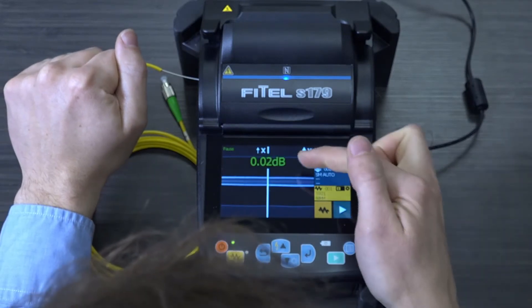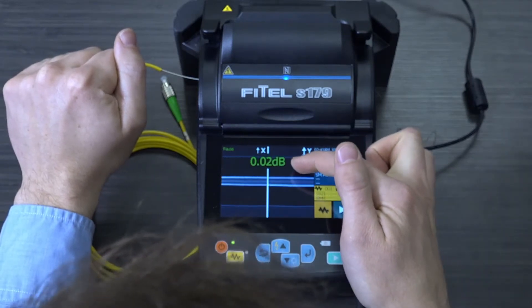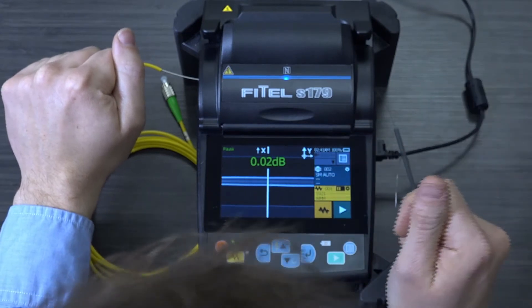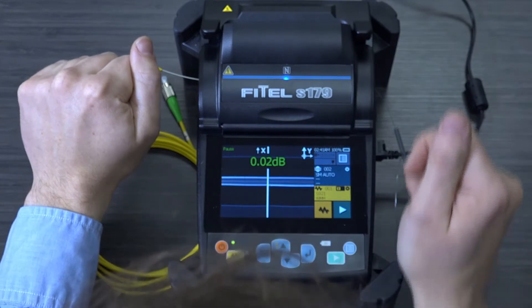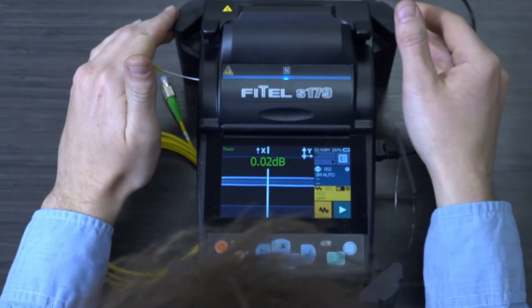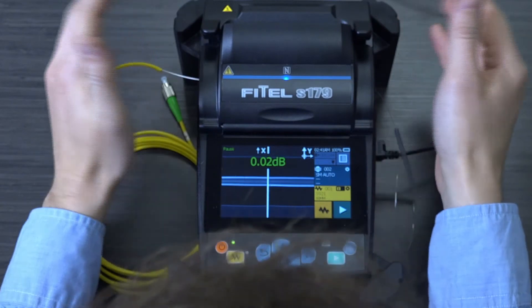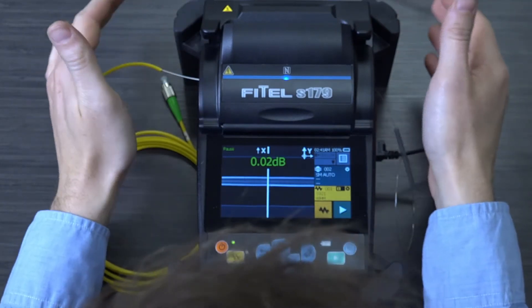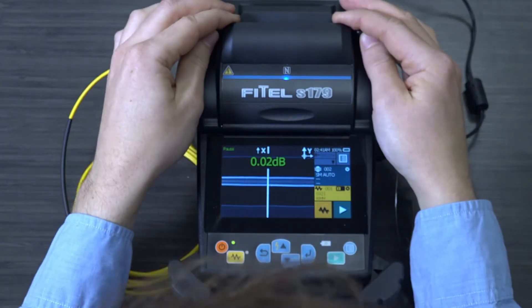Most splicers will display an estimated loss across this splice. Anywhere from 0.02 to about 0.05 dB is very much acceptable. So at this point, we need to protect the splice. So even though it has been fused together, it still is a weak point in the fiber, and if you do not do something to mechanically protect it, it is very highly likely that it will break.